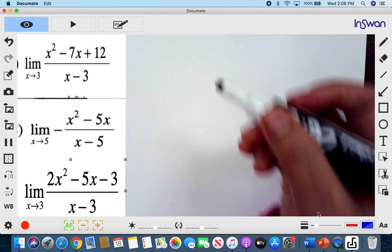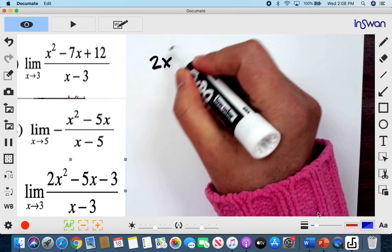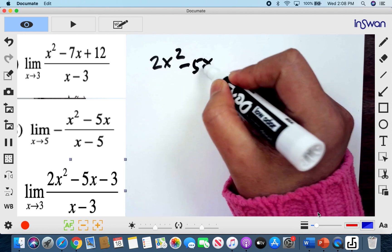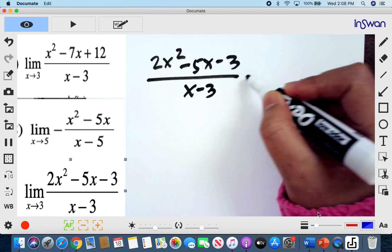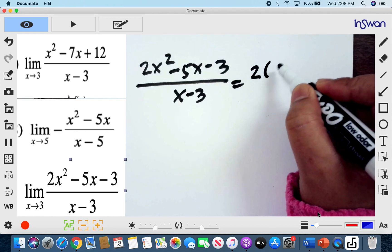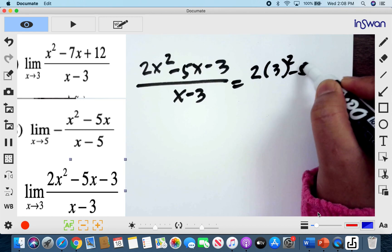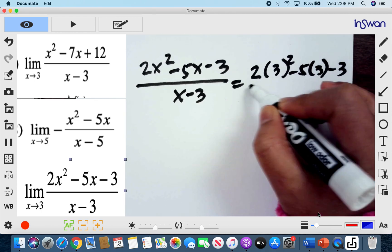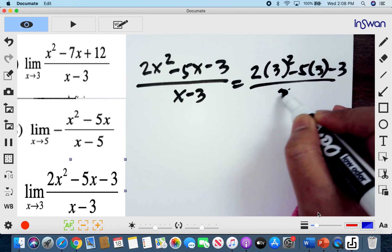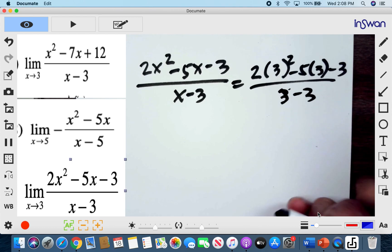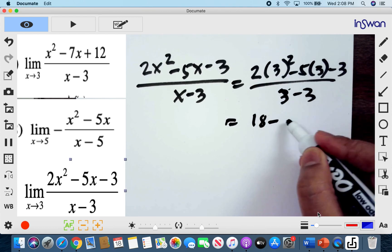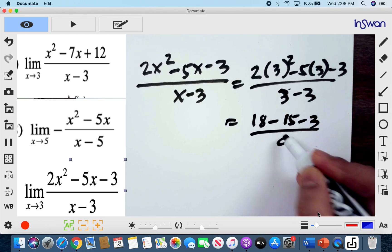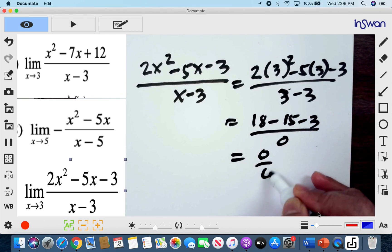So again, our function is 2x squared minus 5x minus 3 all over x minus 3. And our x is approaching 3. So you have 2 times 3 squared minus 5 times 3 minus 3 all over x minus 3. So you now have here 18 minus 15 minus 3 all over 0, which gives us also 0 over 0.